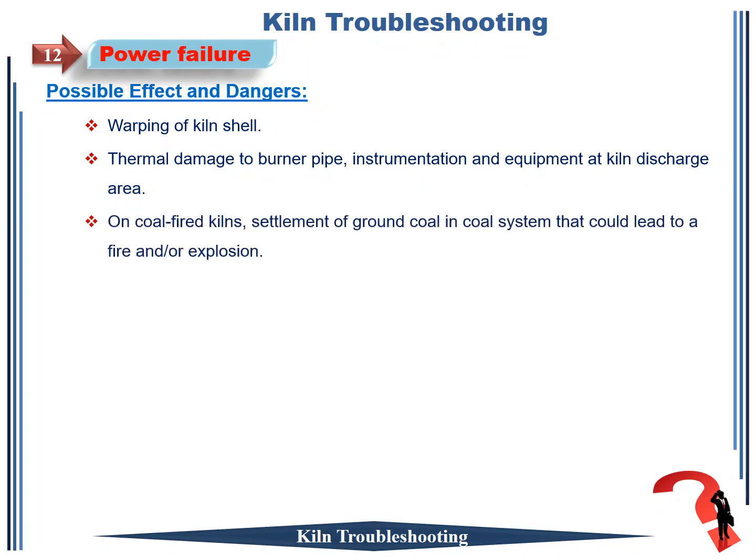Rotary kiln troubleshooting number 12: power failure. Possible effects and dangers: warping of kiln shell, thermal damage to burner pipe, instrumentation and equipment at kiln discharge area. On coal-fired kilns: settlement of ground coal in coal system that could lead to a fire and/or explosion.